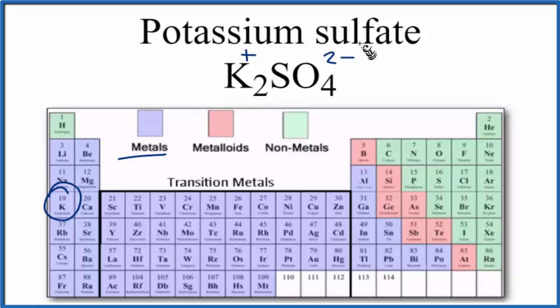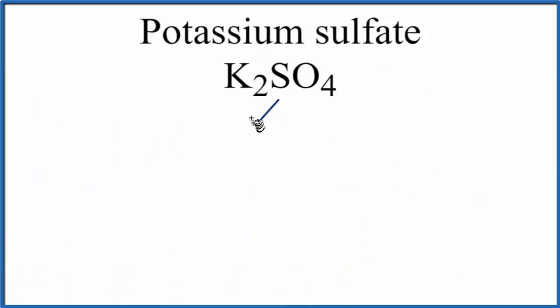We should look, though, at the sulfate ion just for a moment here. So we said sulfur, that's a nonmetal, and then the oxygen, we have four of them, nonmetal. When we have nonmetal plus nonmetal, that is a covalent bond.